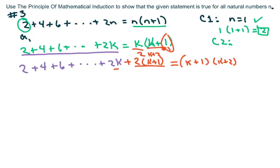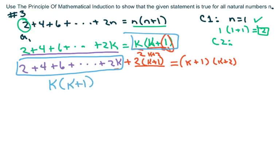So now what I'm going to do is substitute. I know that this portion equals that sum, so I'm going to write k times k plus 1, then I'm going to add my next term, which is 2k plus 2. And we want it to equal this over here, k plus 1 times k plus 2.